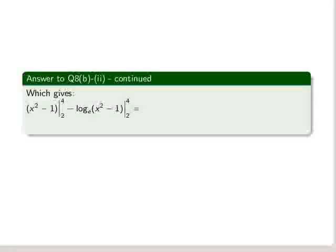So u with x squared minus 1 substituted, then is evaluated over the interval 2 to 4. And then that's subtracted by log e of u, x squared minus 1, again over the interval 2 to 4.